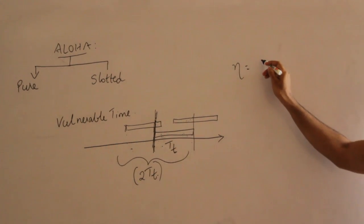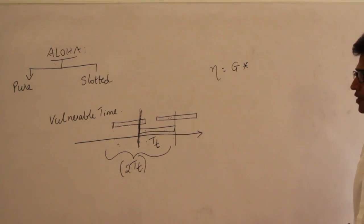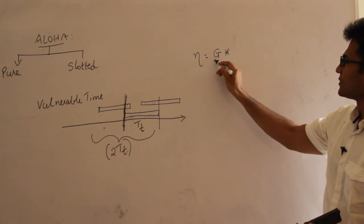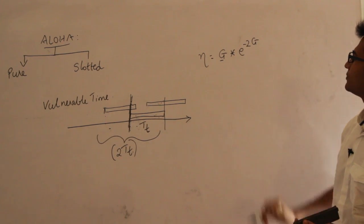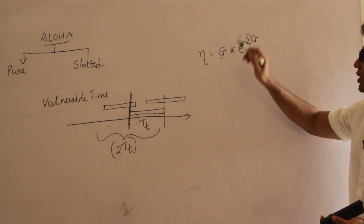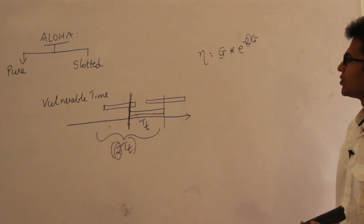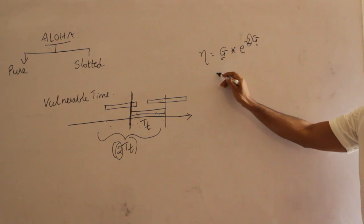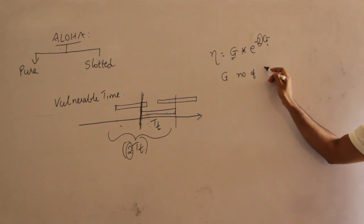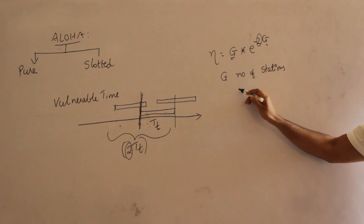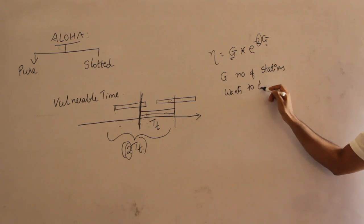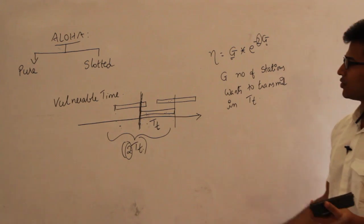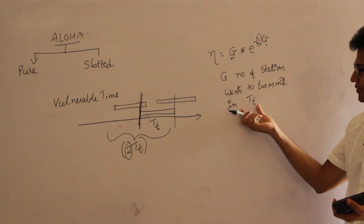The efficiency of Pure Aloha is G × e^(−2G). I am directly writing this without deriving it, as the derivation takes a lot of time — if interested, you can read it in textbooks. We got the factor of 2 because the vulnerable time is 2 × TT. Here, G is the number of stations that want to transmit in one TT slot — that is, how many stations want to transmit during one time slot of duration TT.